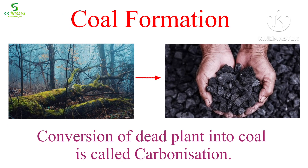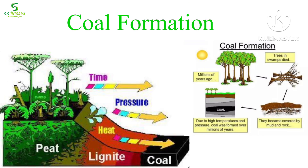This slow process of conversion of dead plants into coal or carbon is known as carbonization. First, plants are buried under the soil, then through bacterial and chemical reactions they are converted into peat, and then with time, under high pressure and temperature, peat is slowly converted into coal.